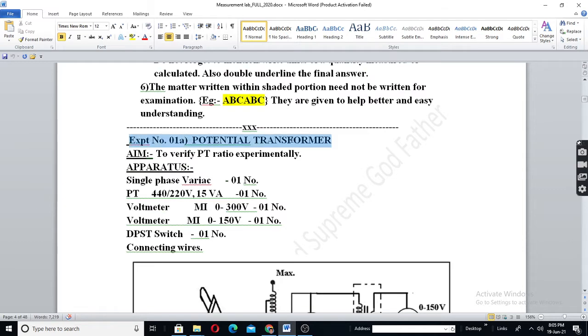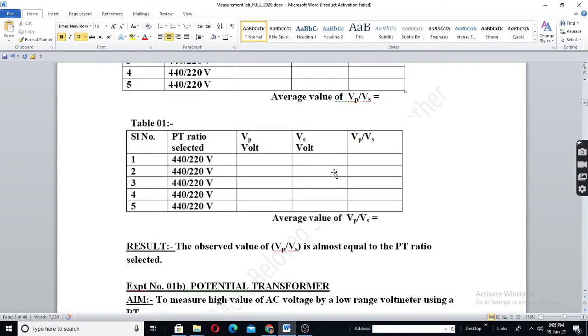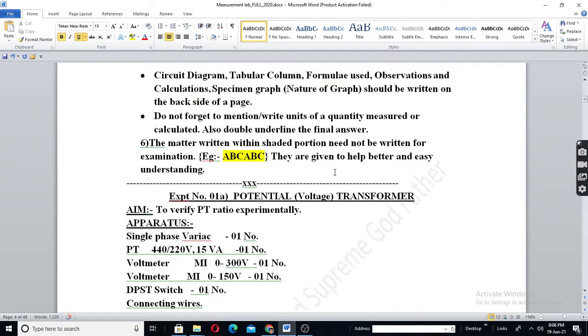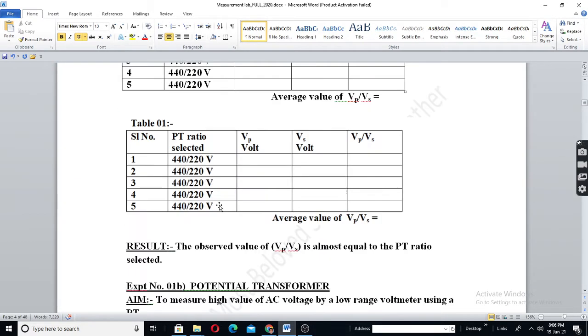Potential Transformer or Voltage Transformer. It is also called as Voltage Transformer. It is used to measure high value of AC voltage. See experiment number 1B. Let us go to 1B first.